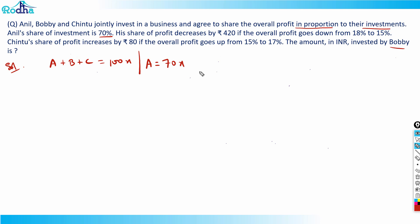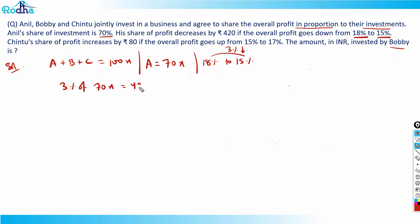Profit is shared in proportion to investments. Anil's share of profit decreases from 18% to 15%, which is a 3 percentage point decrease. This 3% decrease in Anil's share of profit equals ₹420. So the equation is: 3% of 70x = 420.